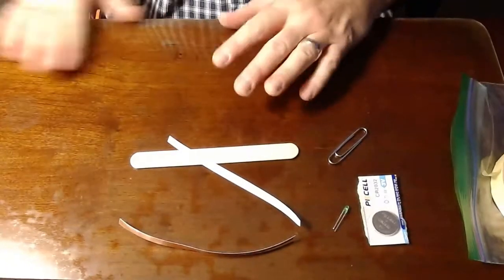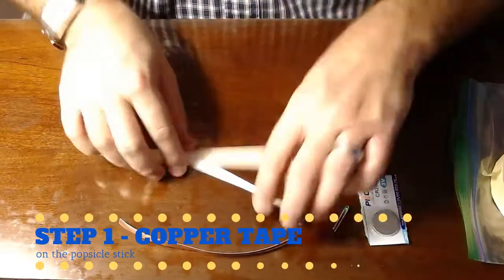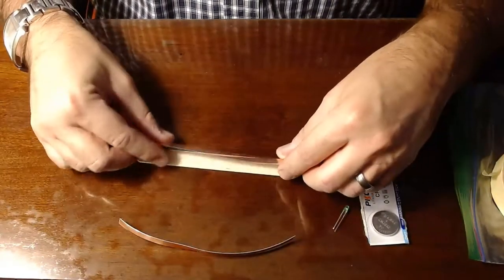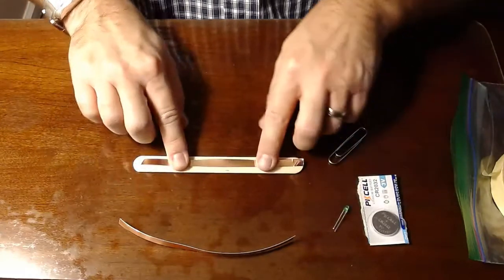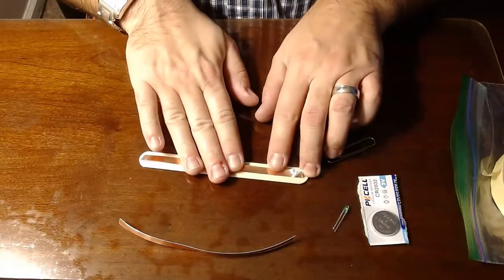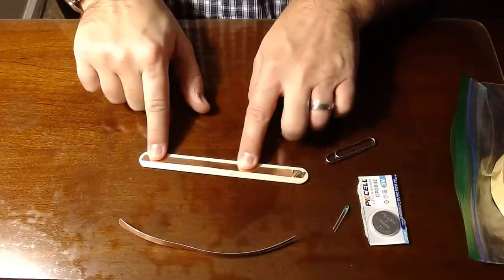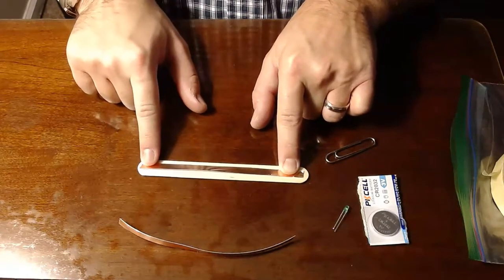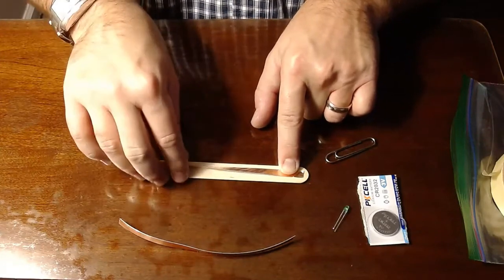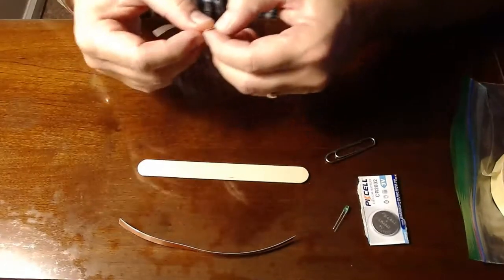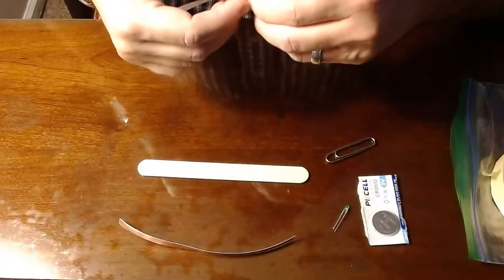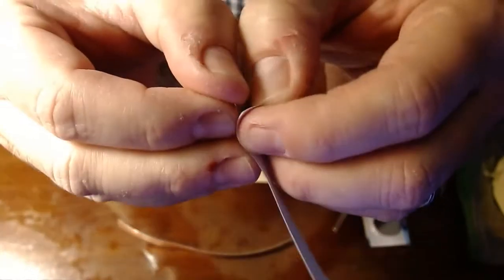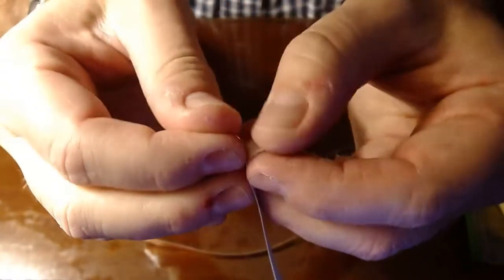We're gonna take the copper tape and put that on either side of our popsicle stick. You'll see that it should fit nicely right on there, but we don't want it to go off the edges. You do not want it wrapping around the sides, otherwise it will not light up your light bulb. To get started I just peel off a little bit of the back here.